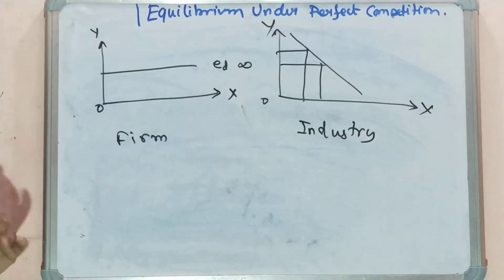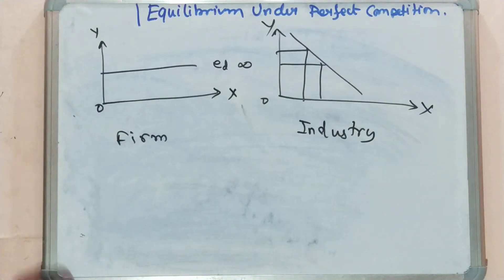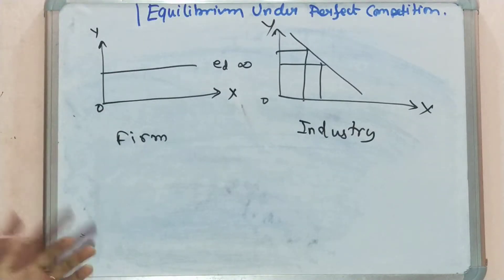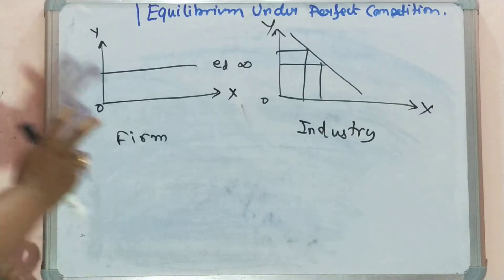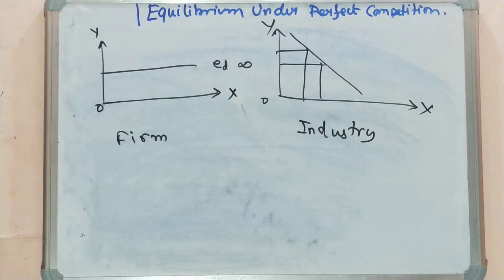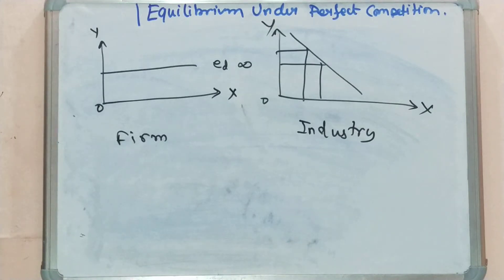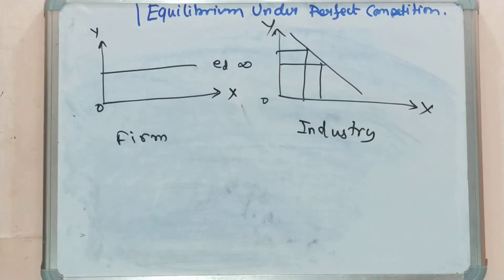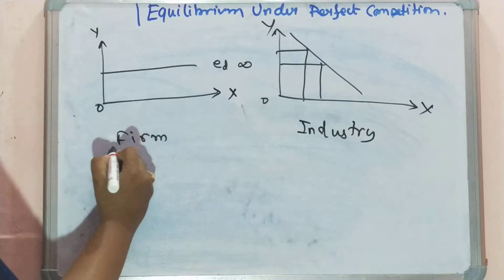While dealing with the perfect competitive model, it is essential to keep separate concepts for a firm and an industry. A firm is an individual enterprise, while an industry is a group of competing firms selling a well-defined product. Under perfect competition, no single firm or consumer can influence the price due to its negligible share. Price is determined by the collective actions of firms through the industry supply curve and the collective actions of consumers.